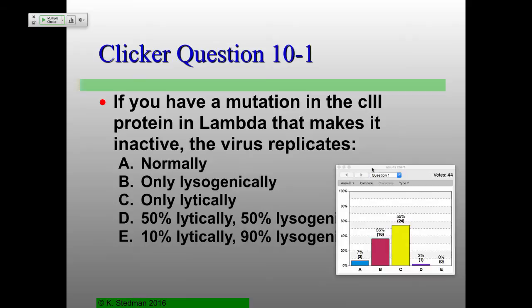What does the C in C3 stand for? Geneticists name things based on phenotypes of mutants. C1, C2, C3 stand for clear plaque. Clear plaque means lysis and lysis only. So the answer is C — only lytically.